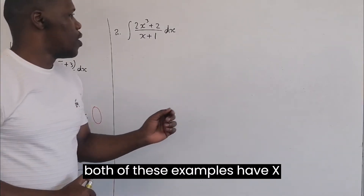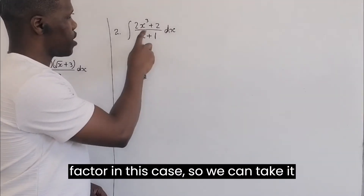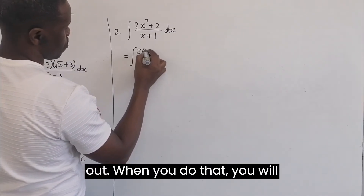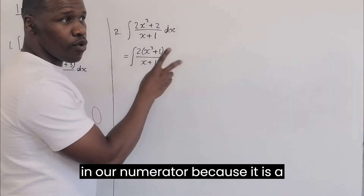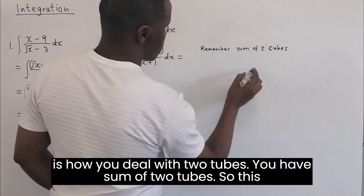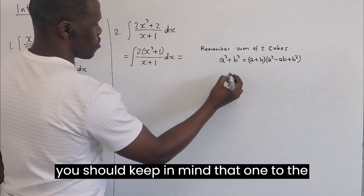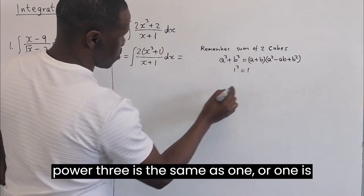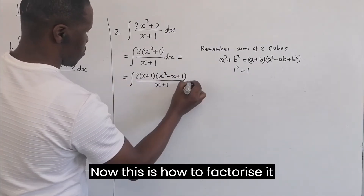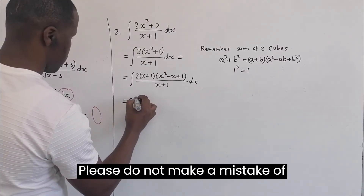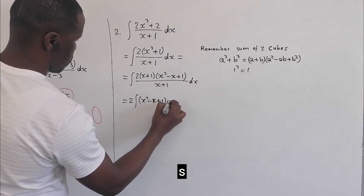Both of these examples have x dividing, so the first step is always to factorize. We have two as a factor in this case, so we can take it out. You will notice the numerator is a sum of two cubes, so you follow the sum of cubes formula. Keep in mind that one to the power three is the same as one, so our one is also a cube. Do not make the mistake of having minus two x on the second term — it is minus x.